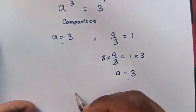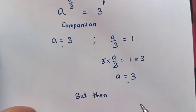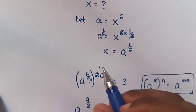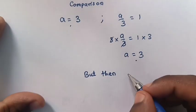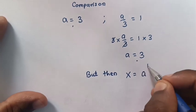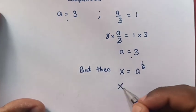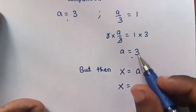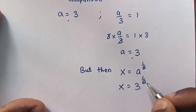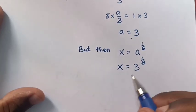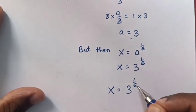Now, if you already got the value of a, recall that before we let x is equals to a power of 1 over 6. So, to find the value of x, we substitute a is equals to 3 here. So, 3 power of 1 over 6. The value of x is 3 power of 1 over 6.